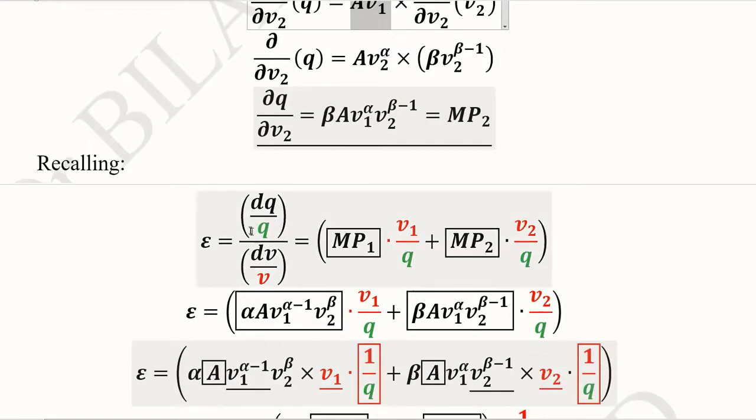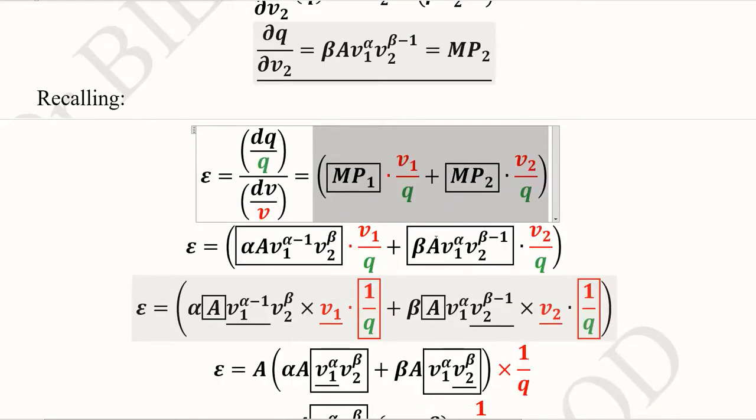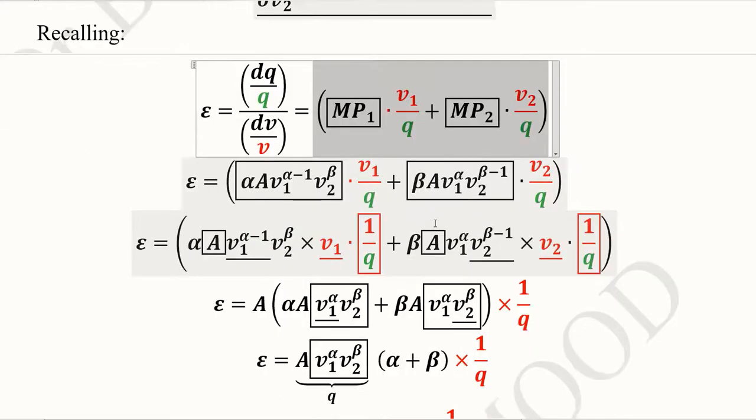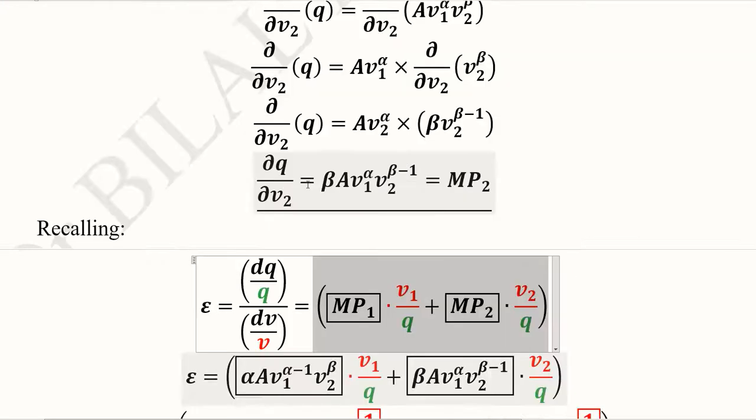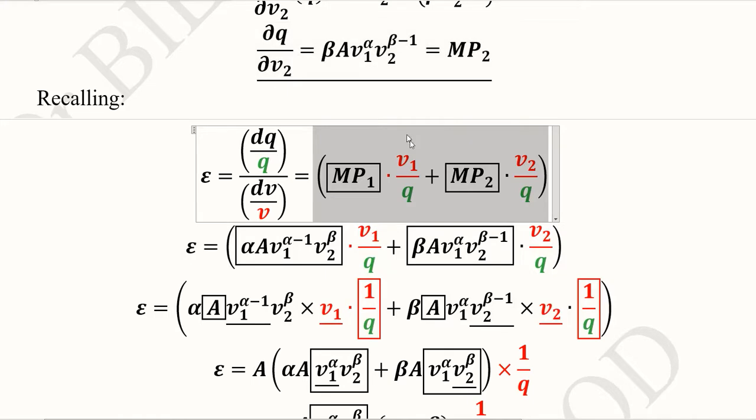Now we can recall the formula. We cannot use this version of the formula; however, we can use this because we focused on this formula to find out MP1 and MP2. The value of MP1 is found, we substitute it here. MP2 is already found as well, we put its value here in place of MP2.